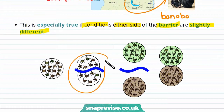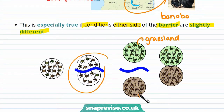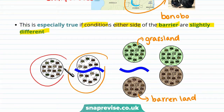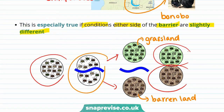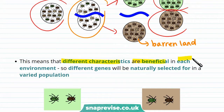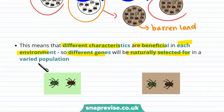Speciation can also occur if the conditions either side of a barrier are slightly different. A population of beetles became isolated — some beetles lived on grassland, whereas others lived on barren land. In the ancestral population there were both green and brown beetles. In the grassland, brown beetles are more likely to die, while green beetles are more likely to survive and pass on their genes.